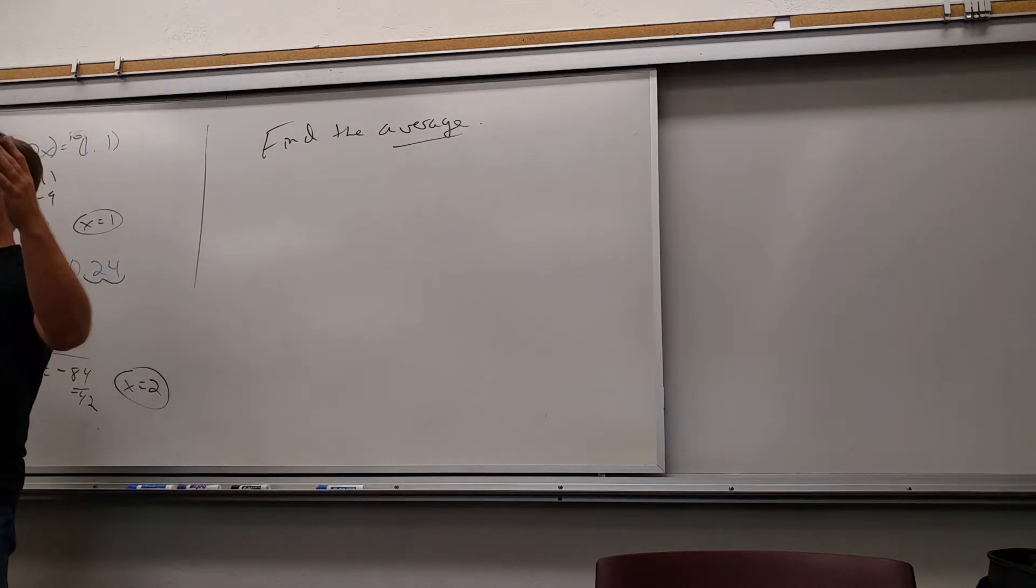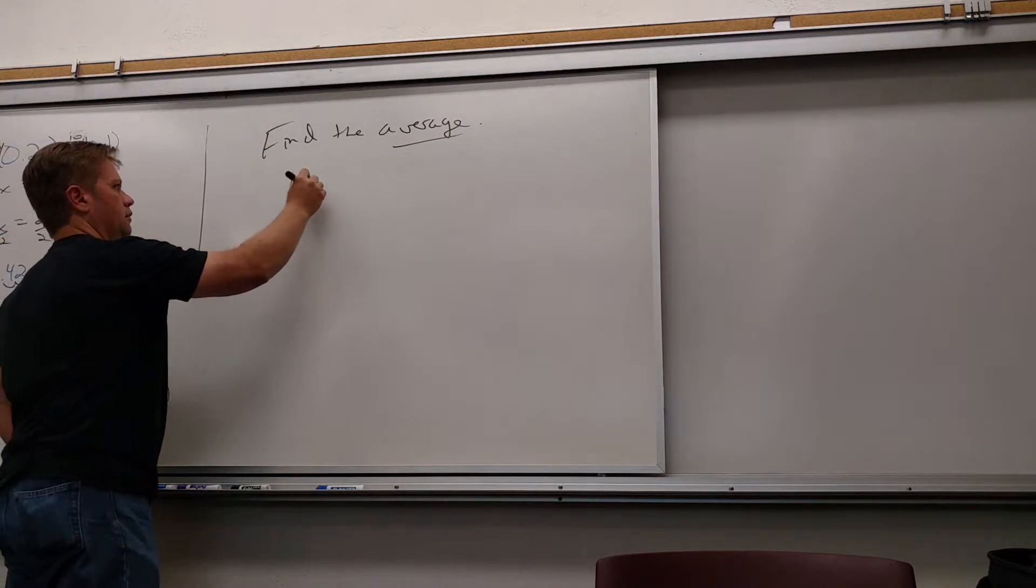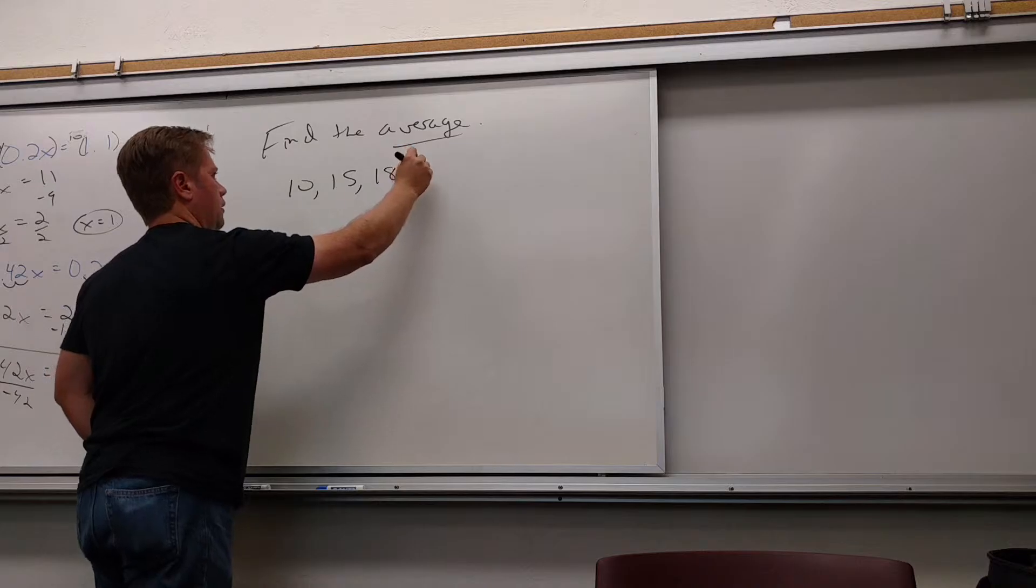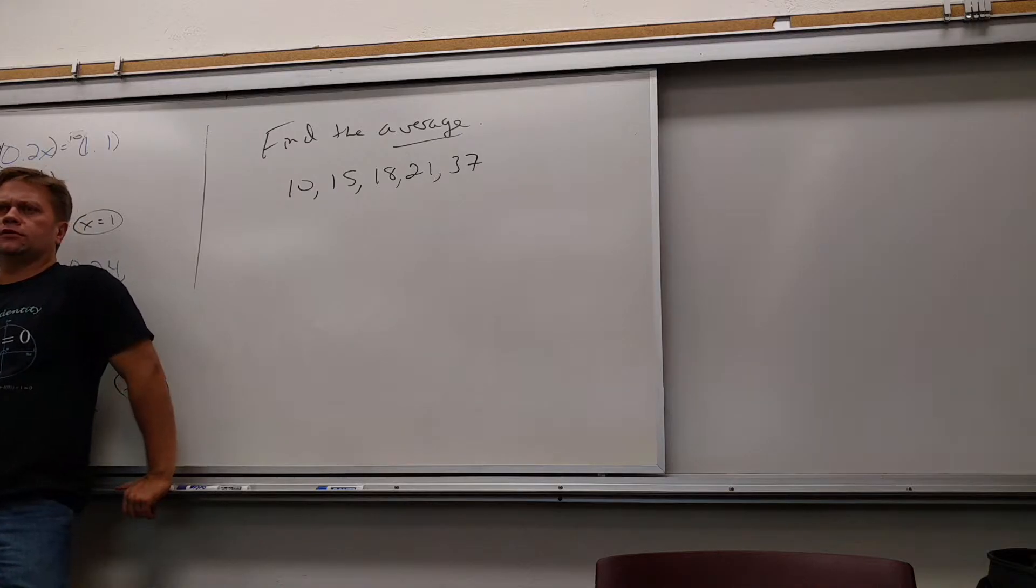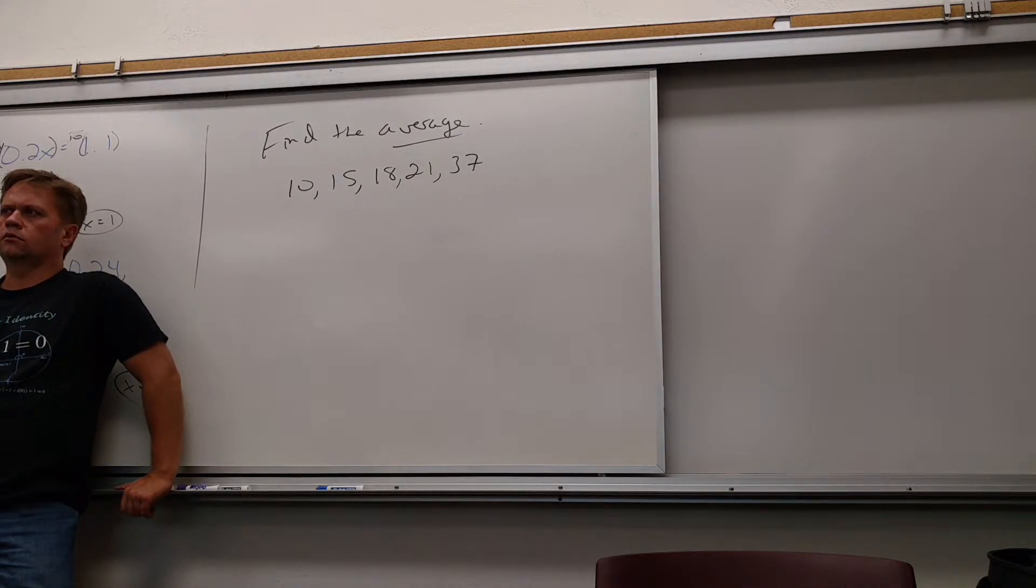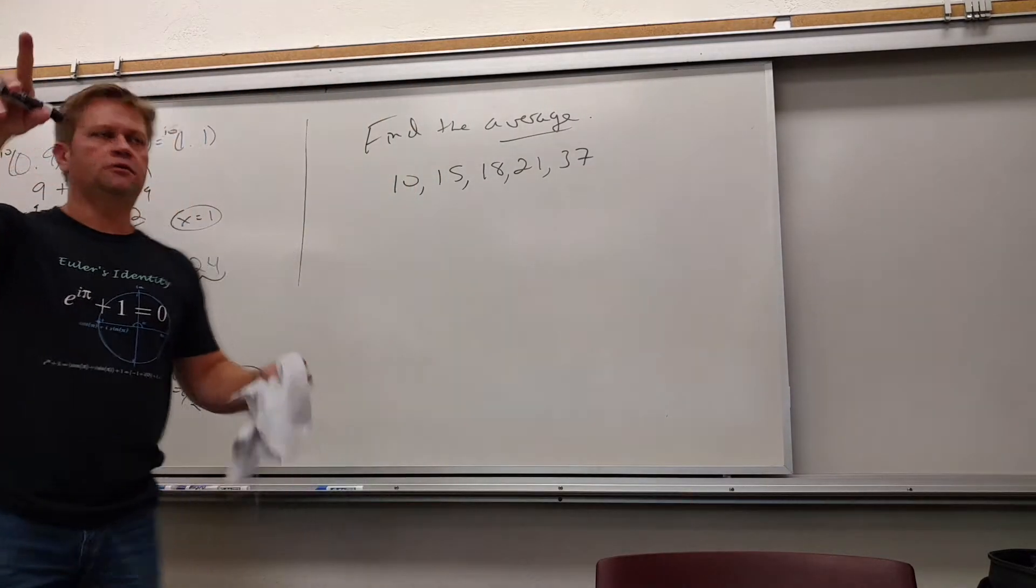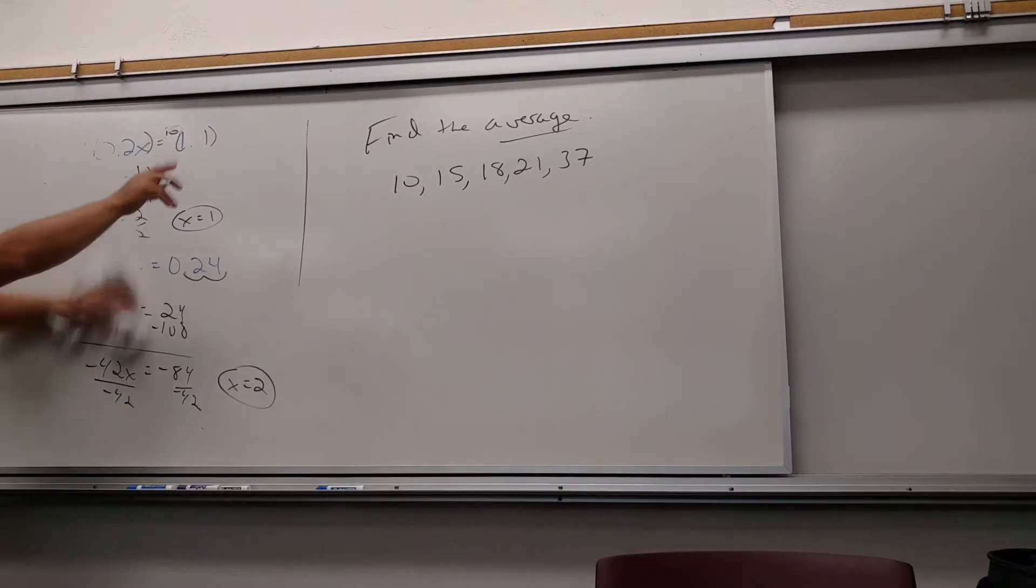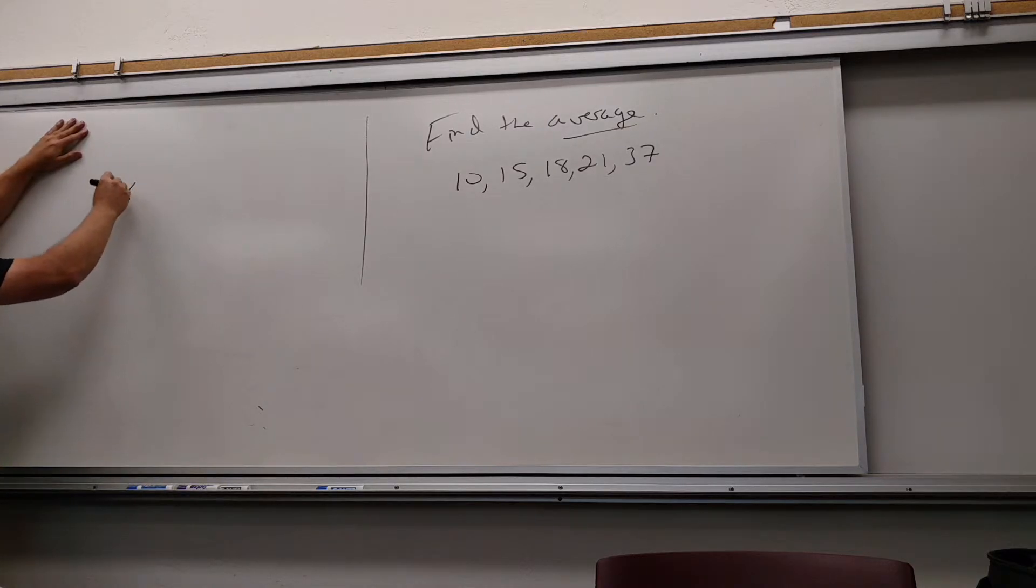How do you find the average of a bunch of numbers? So if I had these numbers here, how would I find the average of those? Add them all together and divide by how many there are. If I add them all together and divide by how many there are, I'll get the average. Now let me show you something. Does that sound familiar? Yep.